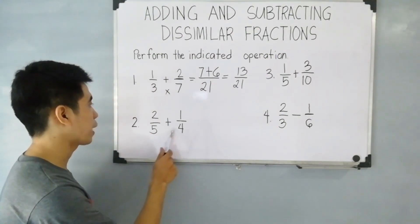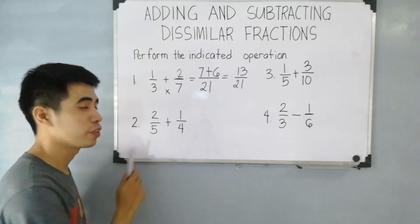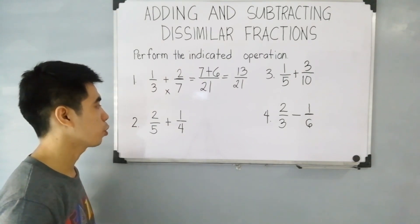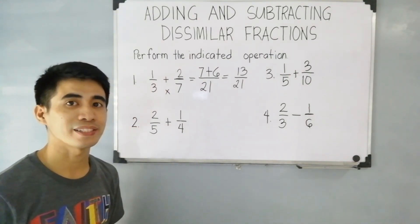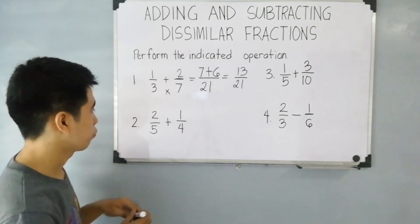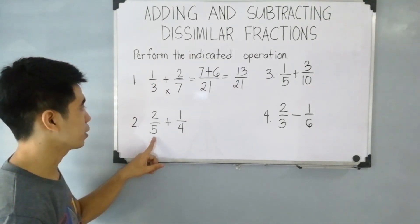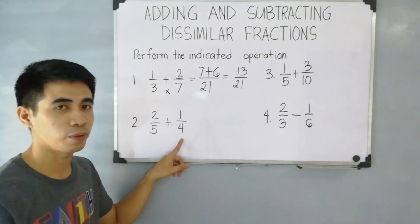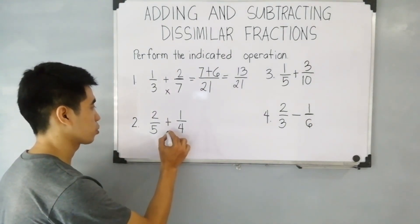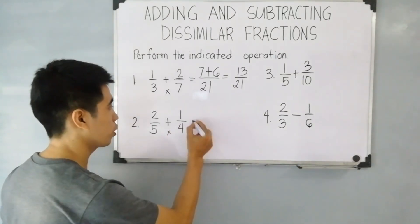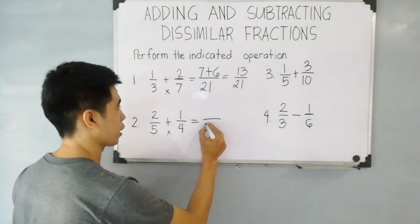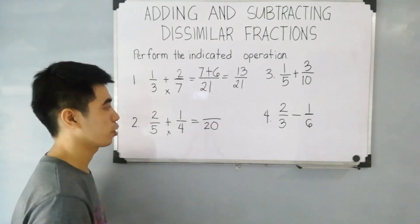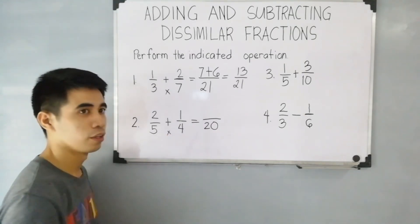For item number 2, 2 over 5 plus 1 fourth. As you can see, they have different denominators — 5 and 4. So therefore, we have to find their LCD. First, analyze if 5 is divisible by 4. 5 is not divisible by 4, so we need to use the other way: just multiply their denominators. So 5 times 4 is equal to 20. We all know 20 is a multiple of 5 and 4, therefore 20 is the LCD of 5 and 4.